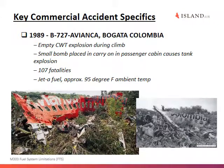In 1989, a 727 crashed in Colombia because a small bomb went off in the cabin, triggering the fuel tank to explode. 107 people were killed in that crash. This bomb is suspected to be linked to drug lord Pablo Escobar.